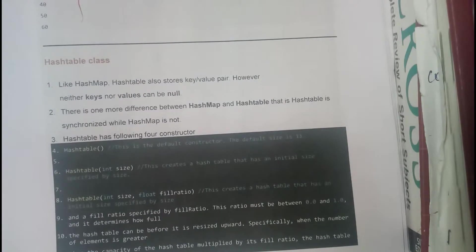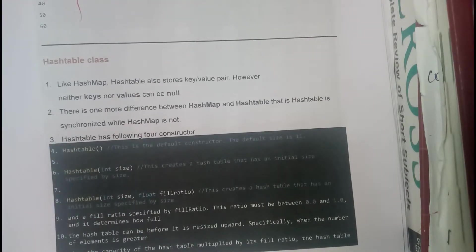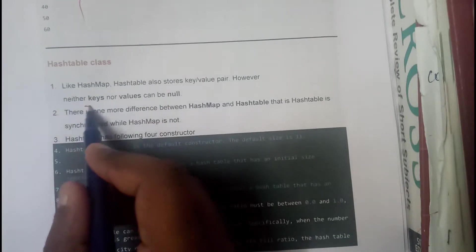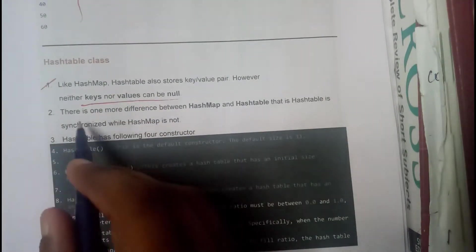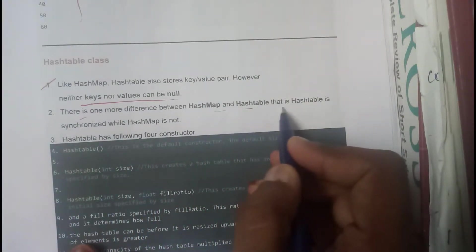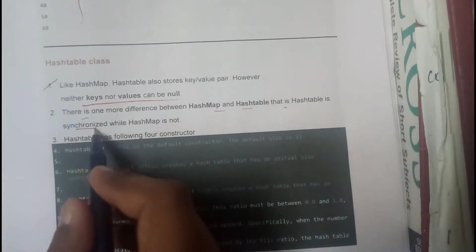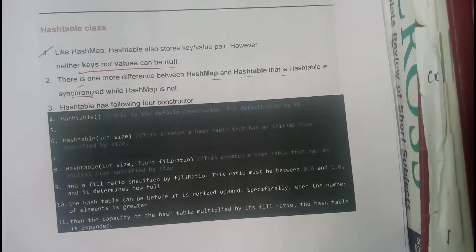Hash table is 100% similar to hash map. However, in hash table the key values and values cannot be null. There is no more difference between hash map and hash table except that hash table is synchronous whereas hash map is not synchronized.